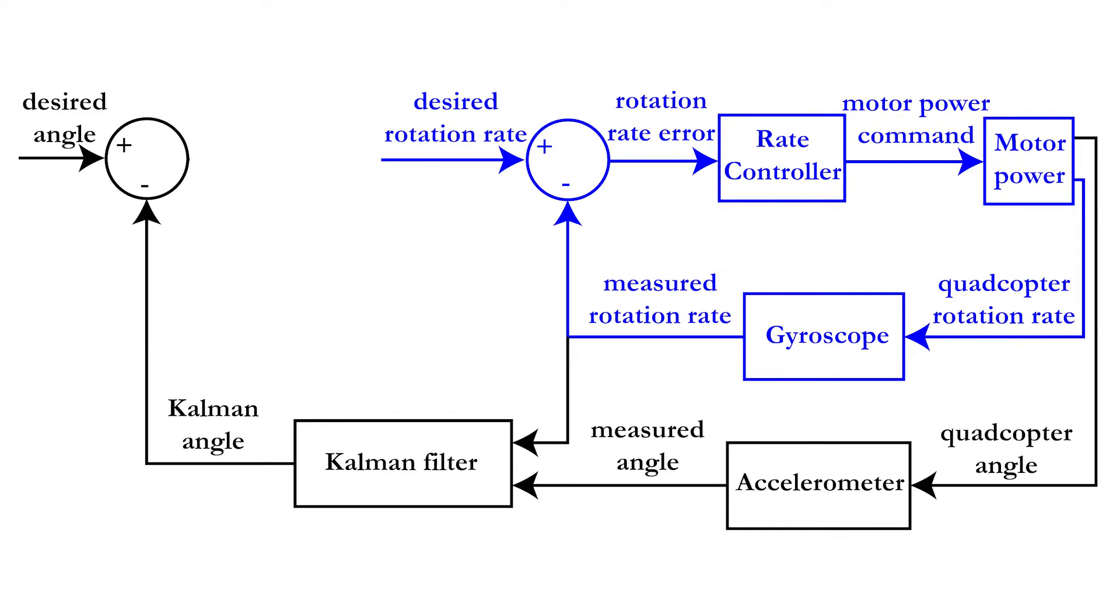This angle is then compared with the desired angle and a controller will transform this data into a desired rotation rate. We now have a two-loop controller with an inner loop in blue and an outer loop in black. All components of this loop were already programmed in our previous projects, except for the desired angle and the angle controller.